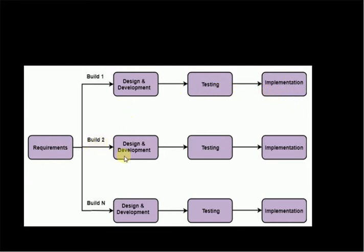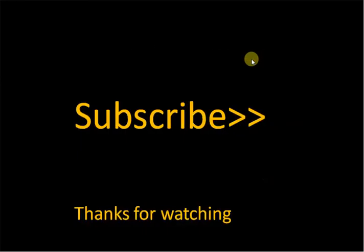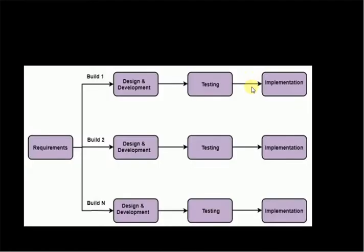After making changes, we will create the second model increment. This same process will happen again for the second increment. We will create the required number of modules following this same process.